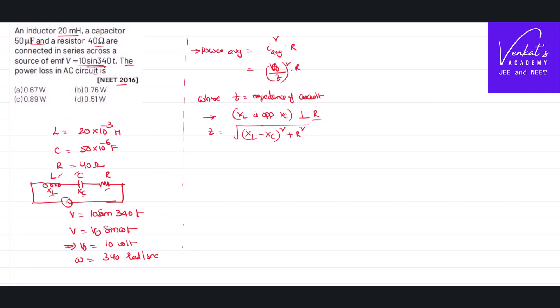First I can calculate Z once I know X_L and X_C. X_C equals 1/(ωC). I found ω is 340, C is 50 microfarad, 50 × 10^-6.